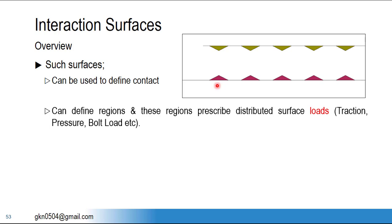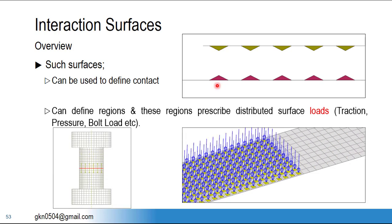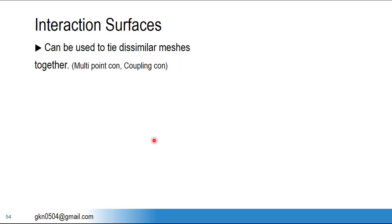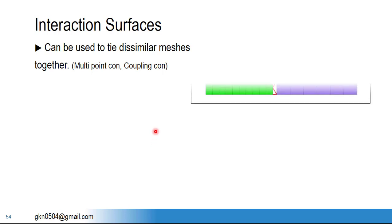Contact surfaces are not only used for defining contacts but also for defining load conditions such as surface traction, pressure, temperature, and bolt pretension load. You can see the yellow areas representing contact surfaces on which pressure is defined. The bolt pretension load is also defined on contact surfaces — the red thing is the contact surface and the yellow lines indicate the pretension load on the bolt.